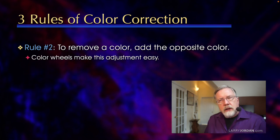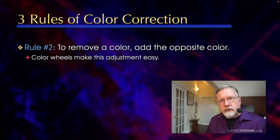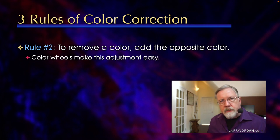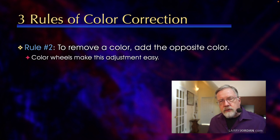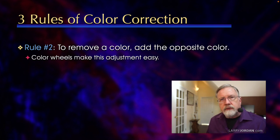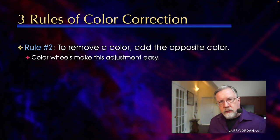The second rule is to remove a color, add the opposite color. And using the color wheels for color grading and color correction makes that easy. The opposite color to blue is yellow. The opposite color to green is magenta. The opposite color to red is cyan. If you've got a green screen shot and there's a green halo around the actor's head, the way you get rid of the green halo is you add magenta. The green and magenta cancel to gray, and the hair looks normal. Opposite colors cancel to gray.